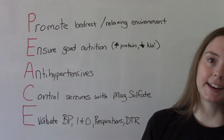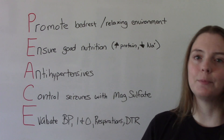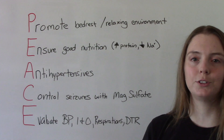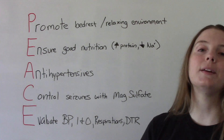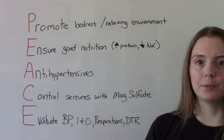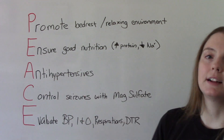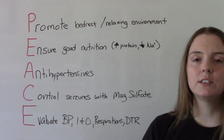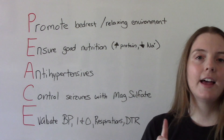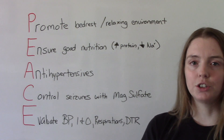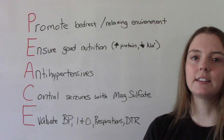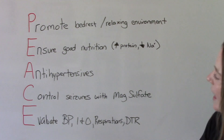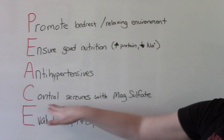A is for antihypertensives. Because this is a blood pressure problem and the blood pressure is too high, we need to treat it. The most commonly used medications for preeclampsia and gestational hypertension are things like hydralazine and labetalol.